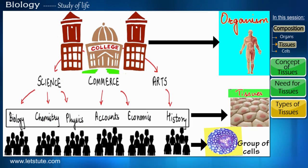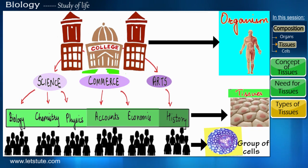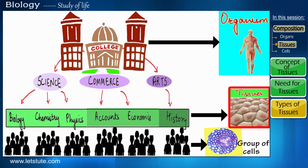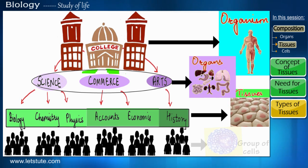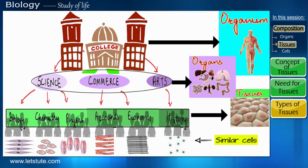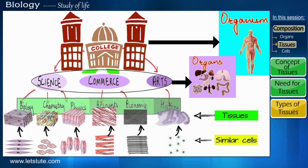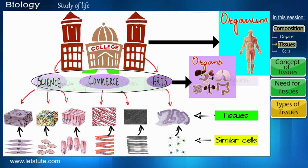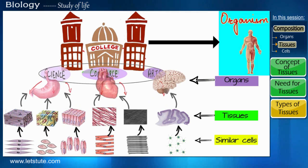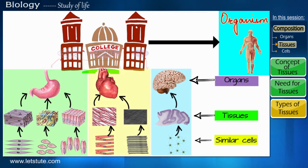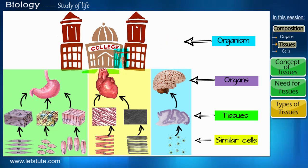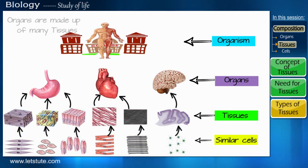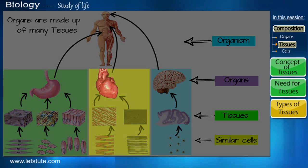Just as many subjects come together to form an individual department, in the same way many tissues with their specific functions come together to form an organ. The type of tissues that form an organ depends on the functions to be carried out by that organ. Thus organs can be made up of not just one but many tissues.